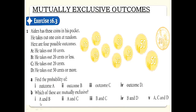Now, which of these outcomes are mutually exclusive? A and B: outcome A is 10 cents, and B includes 20 cents or less, which includes 10 cents — one thing is common, so the answer is no. A and C: 10 cents versus 20 cents — they are different, so yes, mutually exclusive. B and C: 20 cents is in both B and C, so no. B and D: 20 cents or less versus 50 cents or more — they are completely different, so yes.